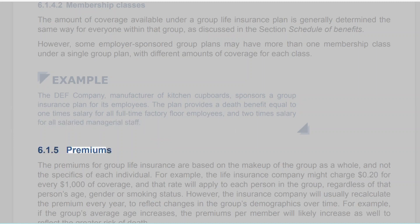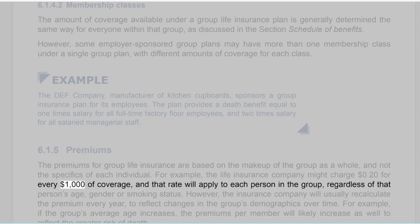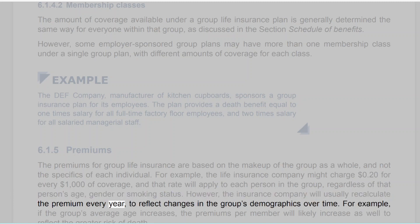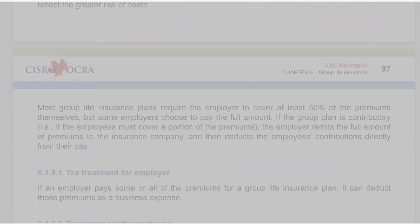6.1.5 Premiums. The premiums for group life insurance are based on the makeup of the group as a whole and not the specifics of each individual. For example, the life insurance company might charge 20 cents for every $1,000 of coverage, and that rate will apply to each person in the group regardless of that person's age, gender or smoking status. However, the insurance company will usually recalculate the premium every year to reflect changes in the group's demographics. For example, if the group's average age increases, the premiums per member will likely increase as well to reflect the greater risk of death.